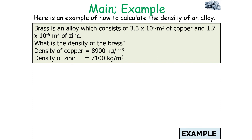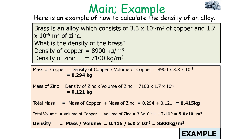Let's look at a worked example. Brass is an alloy which consists of 3.3 × 10⁻⁵ metres cubed of copper and 1.7 × 10⁻⁵ metres cubed of zinc. What is the density of the brass if the density of copper is 8,900 kilograms per metre cubed and the density of zinc is 7,100 kilograms per metre cubed? The first step is to work out the mass of each metal using density times volume, then add them together to get the total mass.